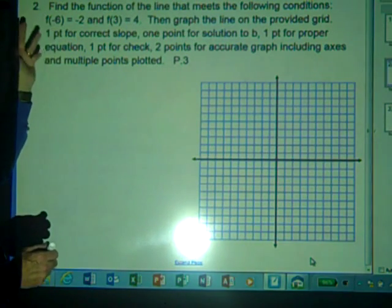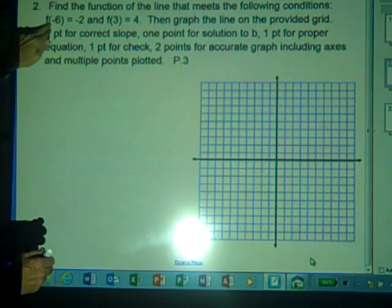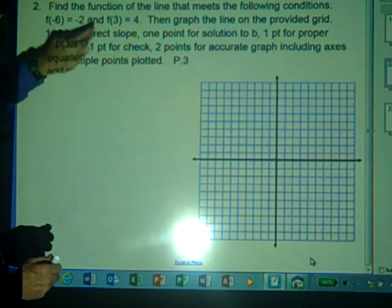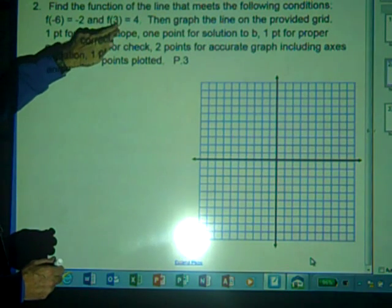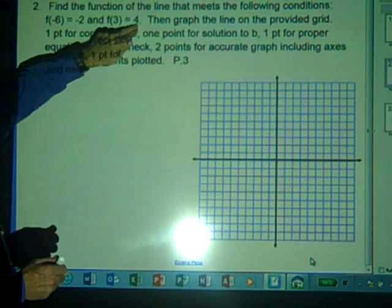This f of negative 6 simply means that if we input the value of negative 6 into the function f, we're going to get an output of negative 2. And likewise, if we input the value of 3 into the function f, we're going to get an output value of 4.